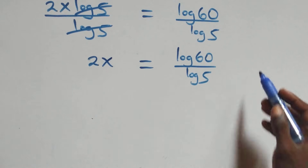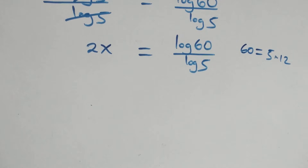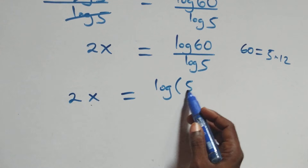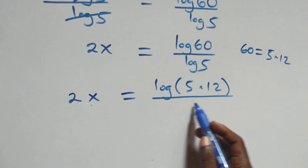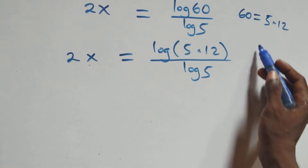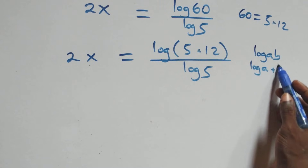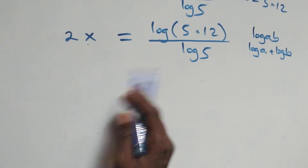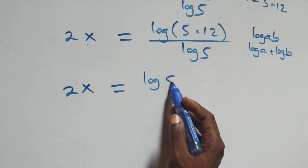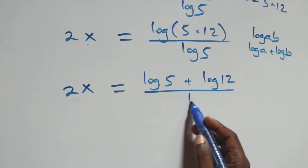From here, we can also write 60 as 5 times 12. Then what we have becomes 2x equals to log(5 times 12) over log 5. This follows: using log(a times b) equals log a plus log b, we have 2x equals to log 5 plus log 12 over log 5.